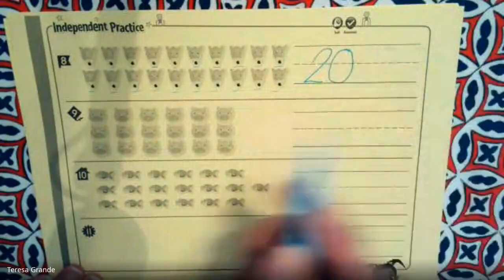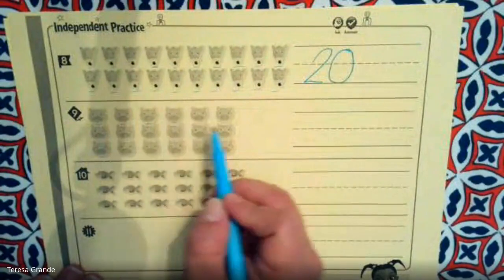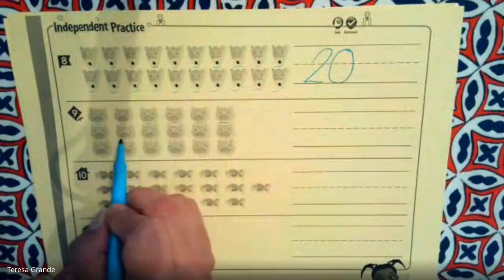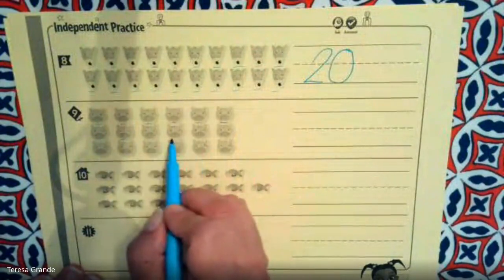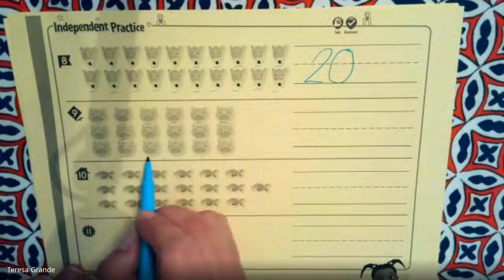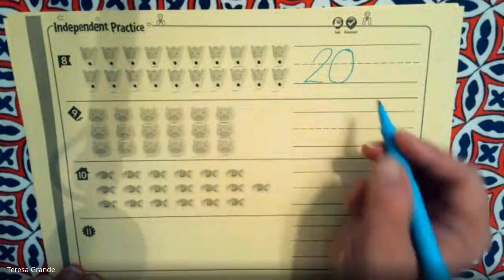Let's count the next one. 1, 2, 3, 4, 5, 6, 7, 8, 9, 10, 11, 12, 13, 14, 15, 16, 17, 18.